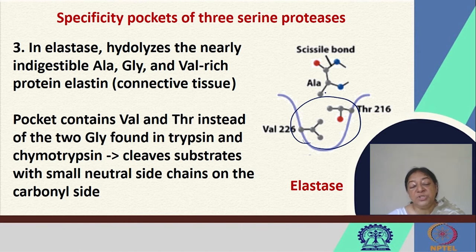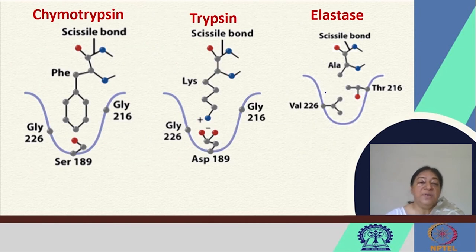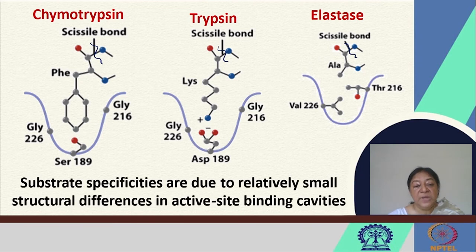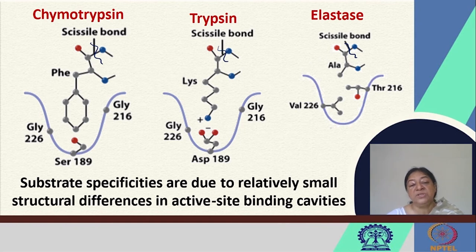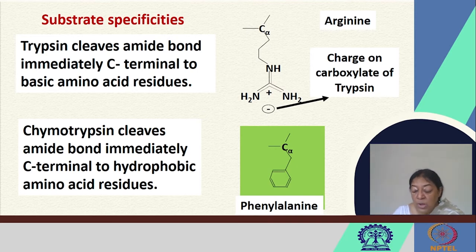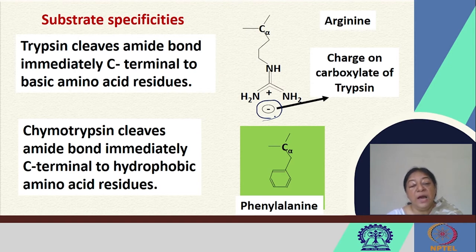These indicate the specific peptide bonds broken in chymotrypsin, trypsin, and elastase. Substrate specificities are due to relatively small structural differences in the active site binding cavities. Trypsin cleaves at the C-terminal of basic amino acids, with the charge coming from the aspartic acid in trypsin. Chymotrypsin cleaves the amide bond following hydrophobic amino acids, accommodated by a hydrophobic pocket.